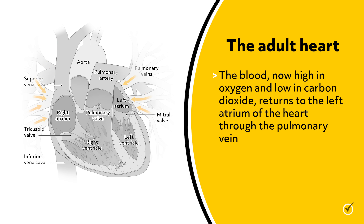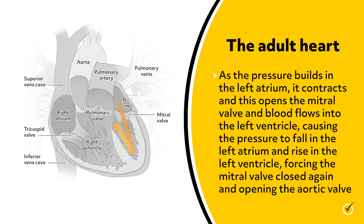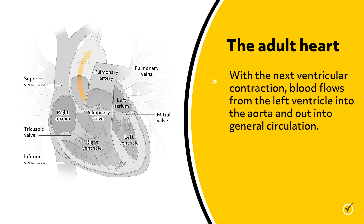Then the blood, now high in oxygen and low in carbon dioxide, returns to the left atrium of the heart through the pulmonary vein. As the pressure builds in the left atrium, it contracts, and this opens the mitral valve and blood flows into the left ventricle, causing the pressure to fall in the left atrium and rise in the left ventricle, forcing the mitral valve closed again and opening the aortic valve. With the next ventricular contraction, blood flows from the left ventricle into the aorta and out into general circulation.